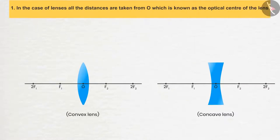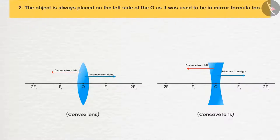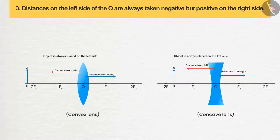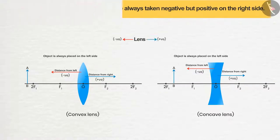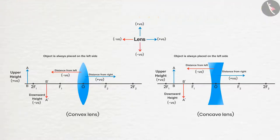Sign convention 1: In the case of lenses, all the distances are taken from O, which is known as the optical center of the lens. 2: The object is always placed on the left side of O, as it was in the mirror formula too. 3: Distances on the left side of O are always taken as negative, but positive on the right side. 4: All the distances above the principal axis are taken as positive, and all the distances below the principal axis are taken as negative.